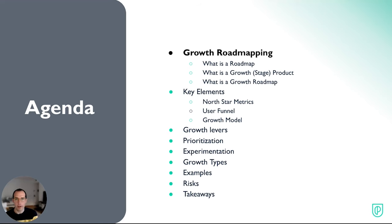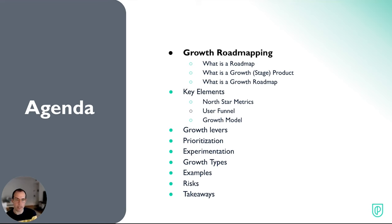We have a very big agenda, so we're going to dive in very quickly. The idea is to talk first about what is a roadmap, then what is a growth stage product, and then combine the two and define what a growth roadmap is. Then we're going to look at the key elements: growth levers, prioritization, experimentation, different types of growth, some key examples, and then risks and takeaways.